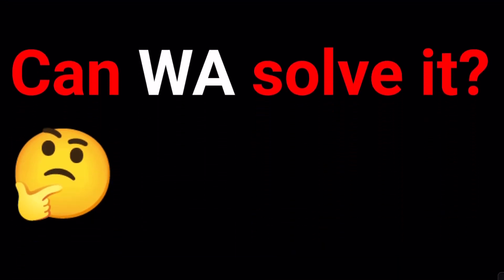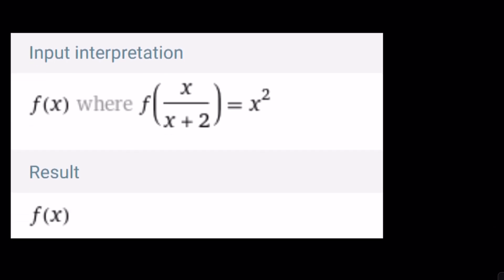So first of all, can Wolfram Alpha solve this problem? Unfortunately, no. I asked Wolfram Alpha, what is f of x if f of x over x plus 2 is equal to x squared? The result is f of x. Well, duh. We do know that. But what is that in terms of x? Can't do it. Too bad.